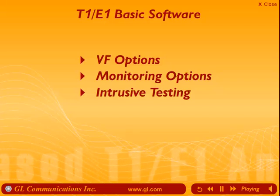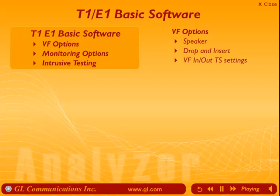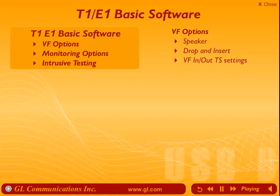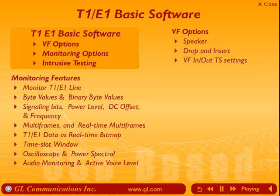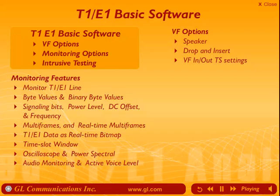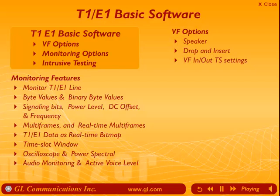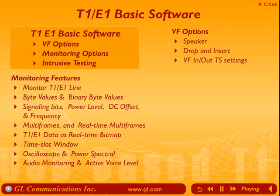T1E1 basic software: the basic software that accompanies the T1E1 analyzer has the following features. Access to the digital PCM signals at the digital and analog level. A built-in speaker to non-intrusively listen. Drop and insert without disturbing other time slots, and direct access to the digital pathway through analog inputs and outputs. Monitoring features include in-service monitoring of T1E1 circuit connections; alarms, frame errors, sync loss, and bipolar violation signals including received frequency and received signal level. Data bytes, signaling bits, power level, frequency, multi-frame data, and DC offset can be viewed on all 24 or 32 time slots. Graphical views of PCM signals are available via oscilloscope and power spectral views.